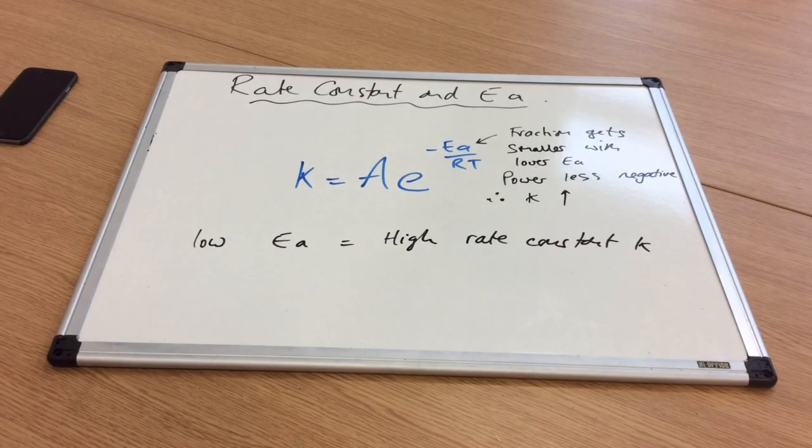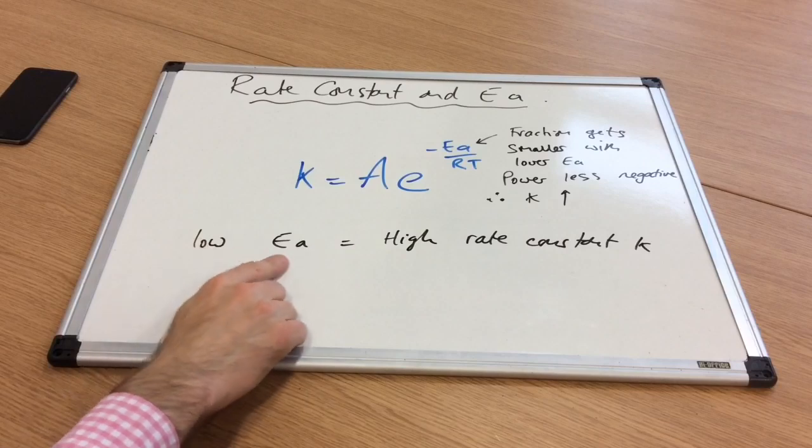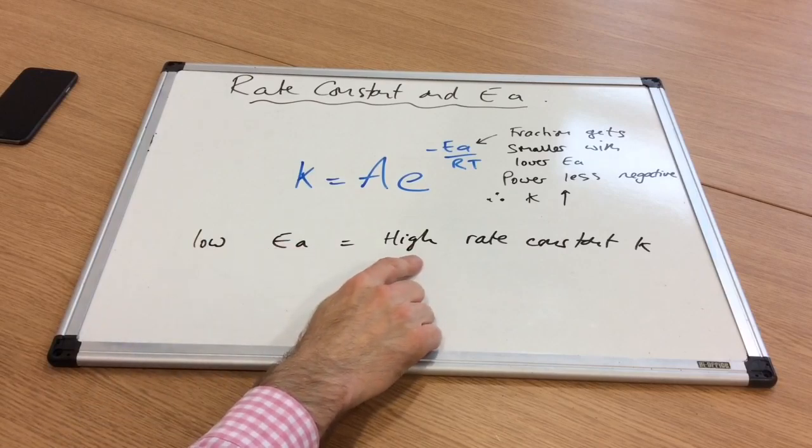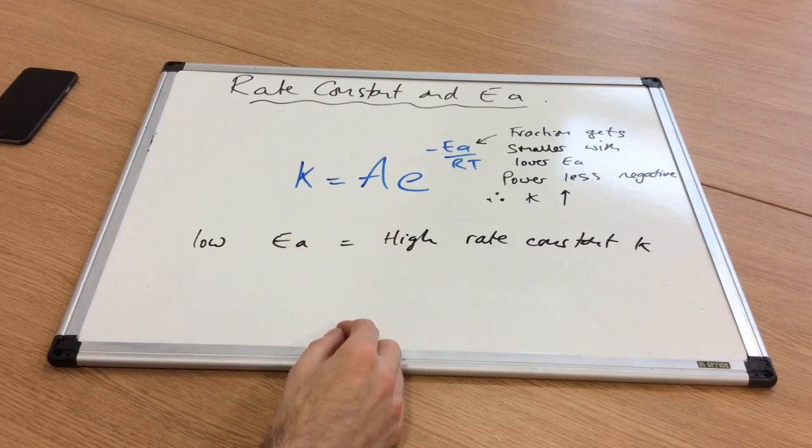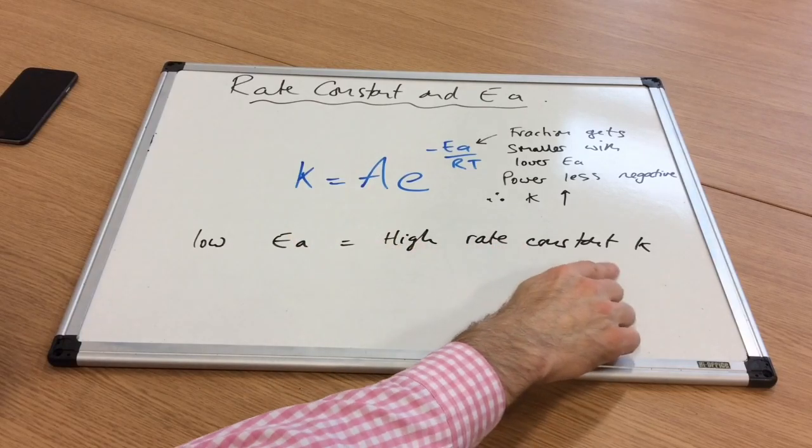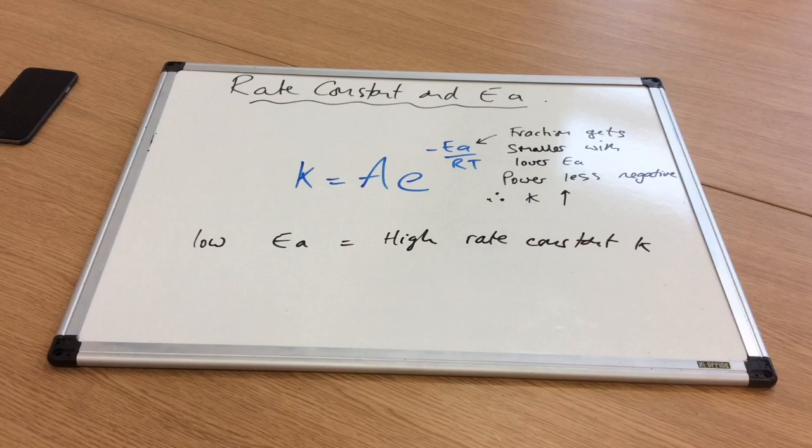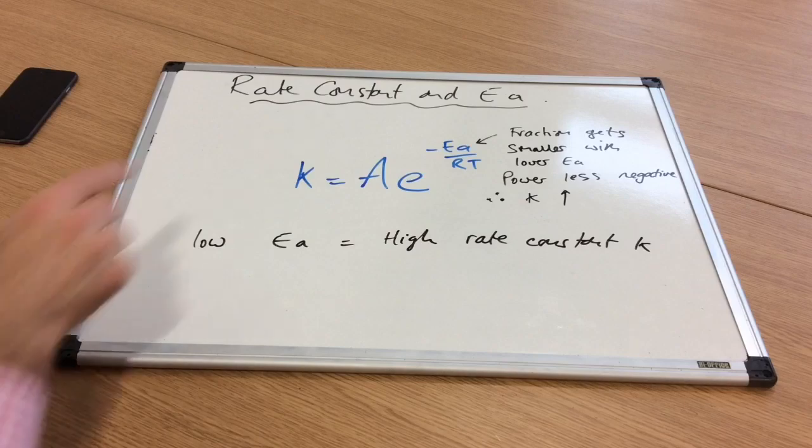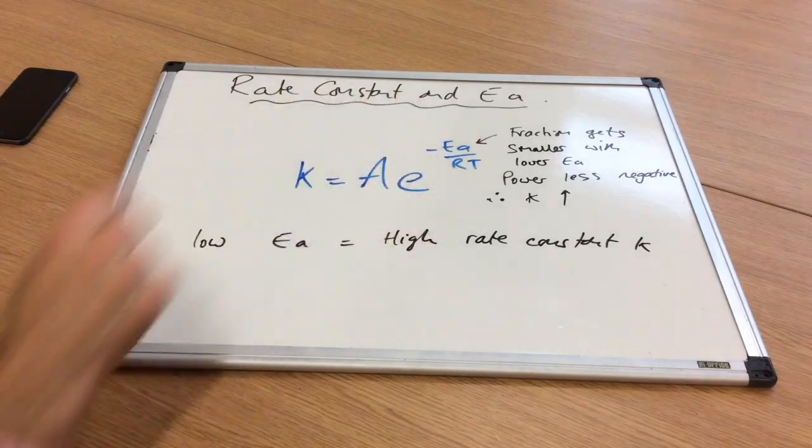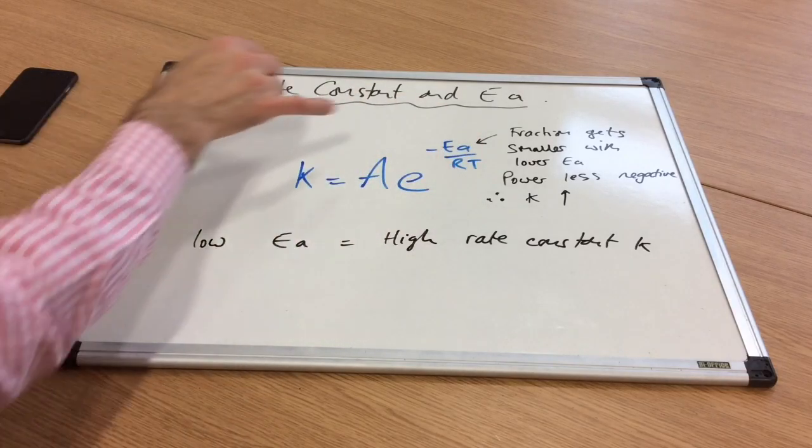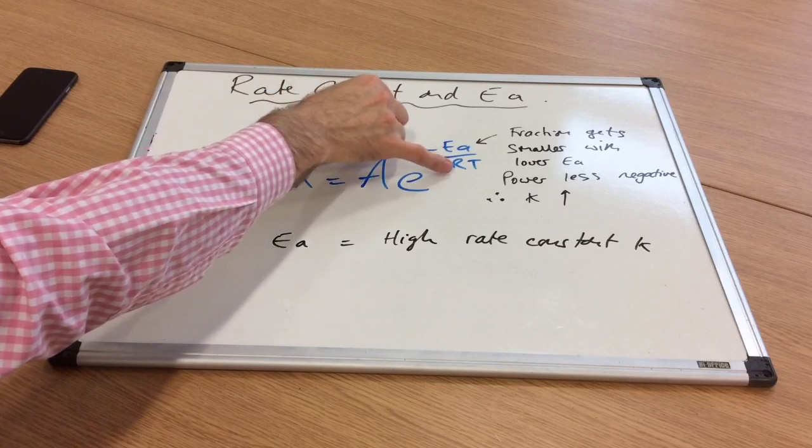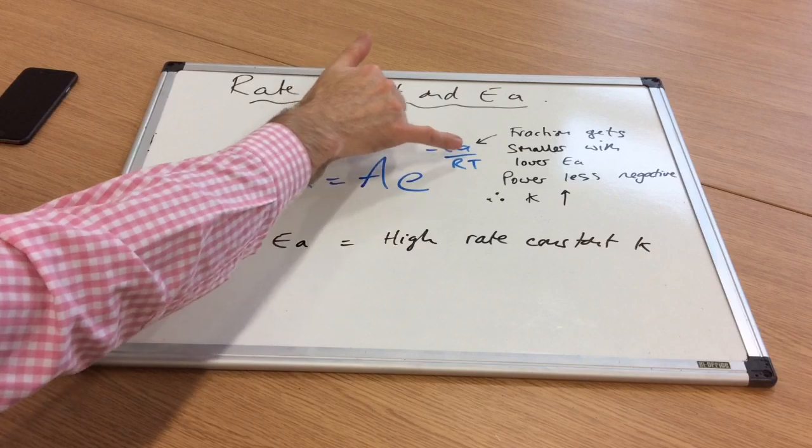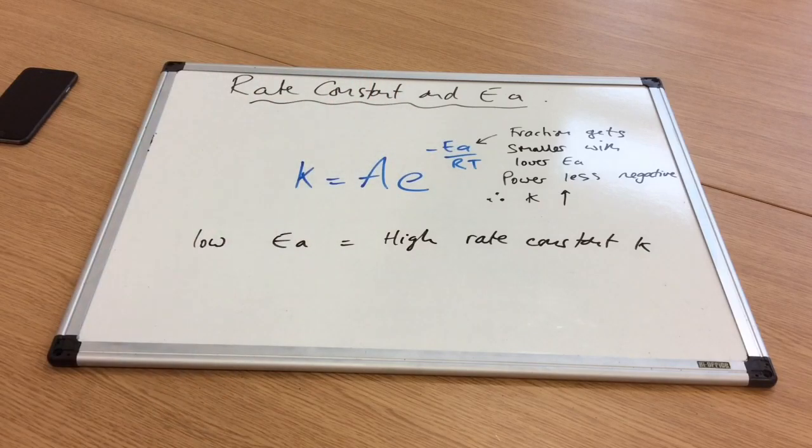Now let's look at the flip side. A low activation energy will lead to a high rate of reaction, more successful collisions per second, and so we would see that as a high rate constant. Looking at the Arrhenius equation, low EA means this fraction—this power—is getting smaller because we've got a smaller number on the top being divided by these numbers, so the power gets less negative, and that's going to increase K.